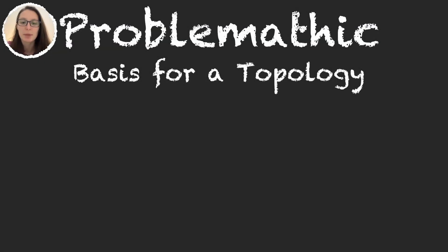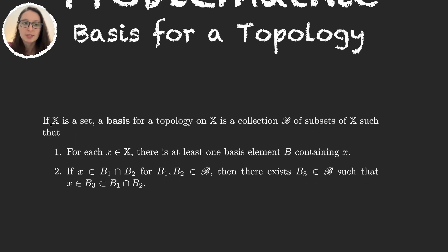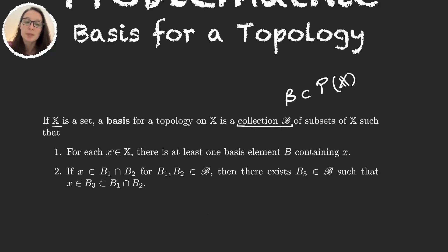In this video we're going to be talking about the basis for a topology — a very important concept in topology, so it's essential that we understand it correctly. We have some set X, and we say that a basis for a topology is going to be a collection B of subsets of X. The first property: for every element x in the set, there exists some set B in the basis that contains x.